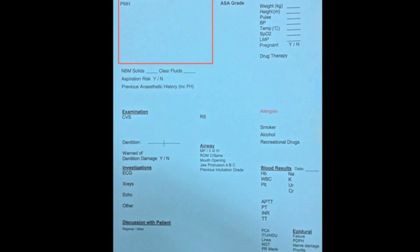I then ask about medical problems. It's important to be thorough here, but pay special attention to cardiorespiratory symptoms and disorders. It's also really important to get an idea of the patient's functional status. Questions such as, can you climb a flight of stairs in one go, gives helpful information about cardiorespiratory function and how well an anaesthetic might be tolerated.